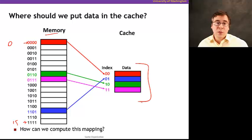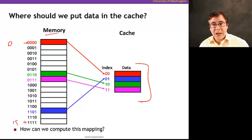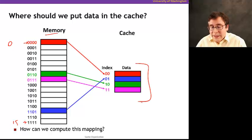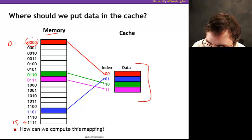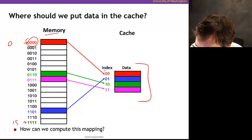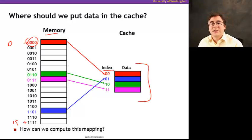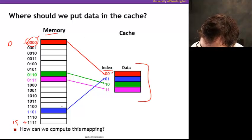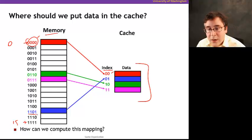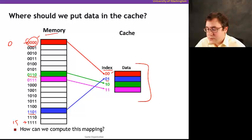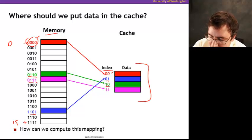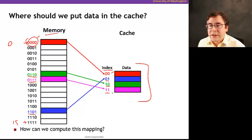Since memory is bigger, there will be different memory locations that map to the same place in the cache. One way we can go about doing that is to use the address and compute the index — the location in the cache where the data goes. For example, address 0000 goes to index 0; address 1101 goes to index 1; address 1010 goes to index 10; and address 0111 goes to index 11.